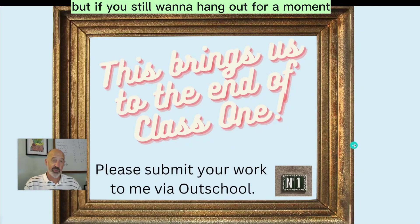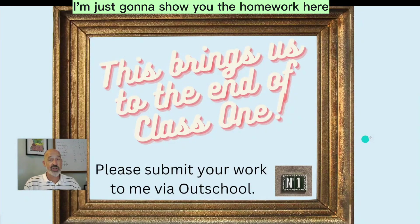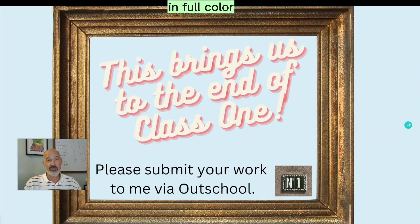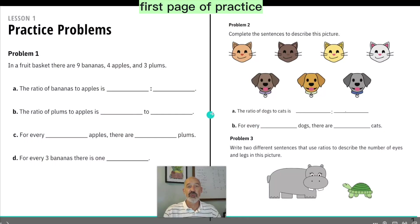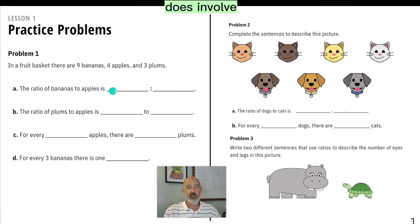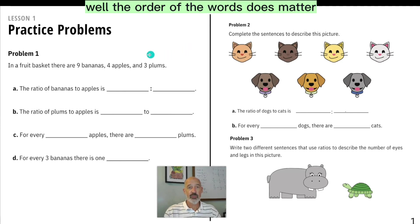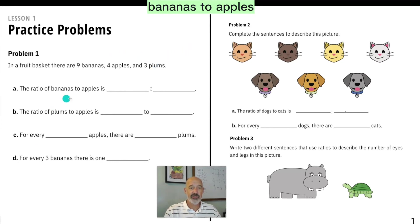But if you still want to hang out for a moment, I'm just going to show you the homework here in full color so you can see it. The first page of practice does involve just understanding how to say and speak ratios. Remember when I said the order of the numbers matters? Well, the order of the words does matter. So when it says bananas to apples, you need to write the ratio in that order and so on and so forth. And then problems two and problems three.